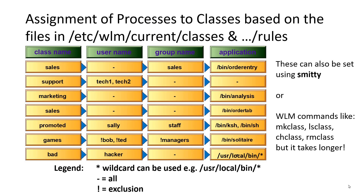We have to assign all our processes to workload management classes. We can do that based on two files, or we could use SMIT, which has a whole lot of panels for doing this. Or we can use underlying WLM commands like mkclass, lsclass, chclass, and rmclass. But by the time you've worked out all the parameters for those commands, you might as well go straight into /etc/wlm/current/classes, copy an example, cut and paste it, and change the details for your new class. That takes seconds versus minutes to get the command syntax right.